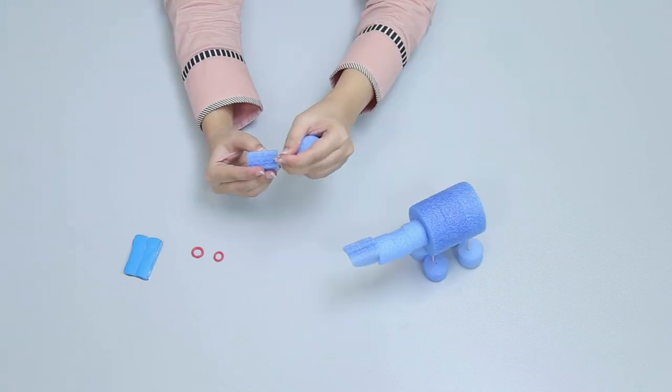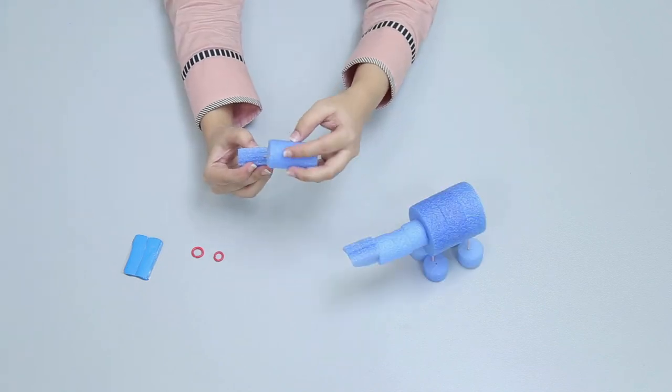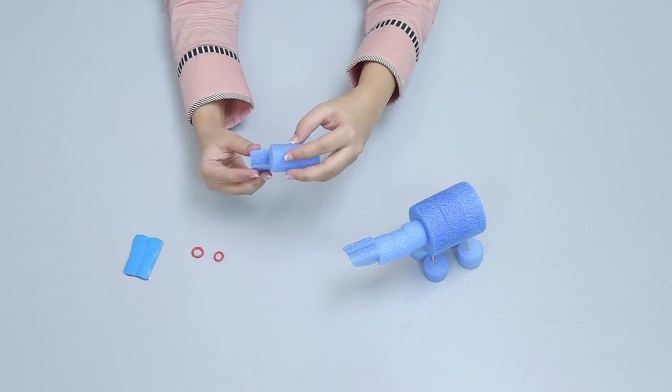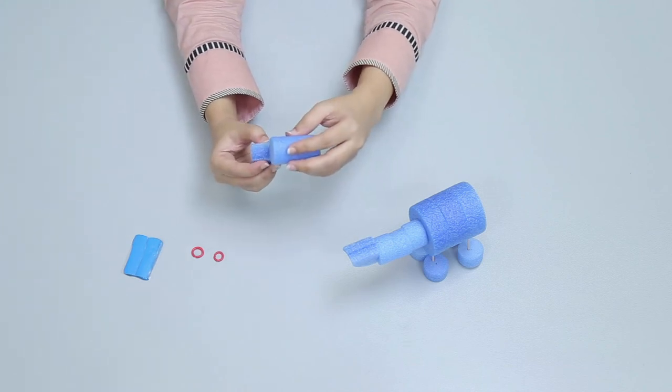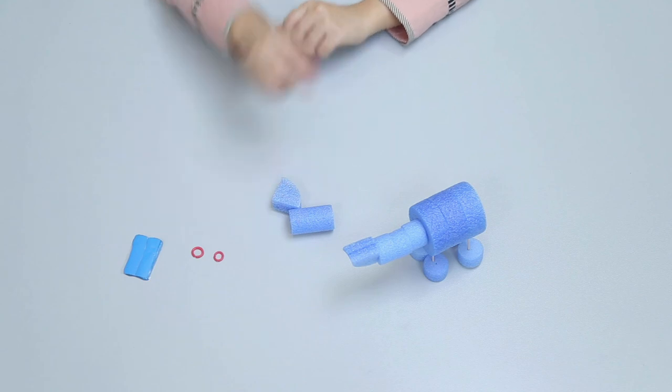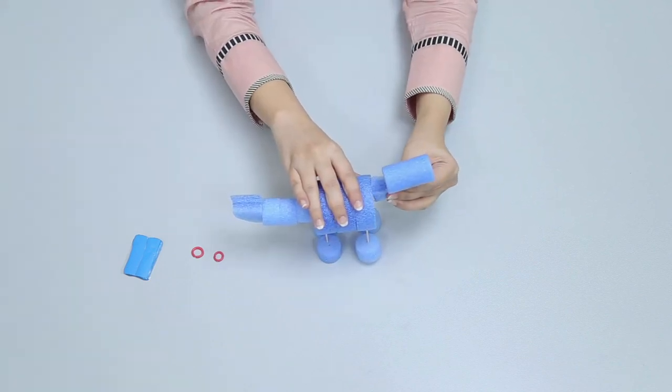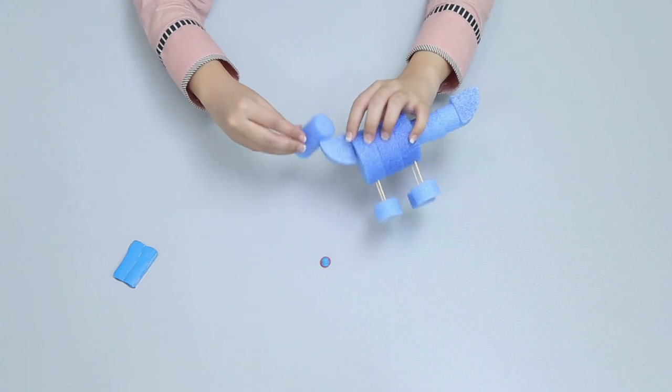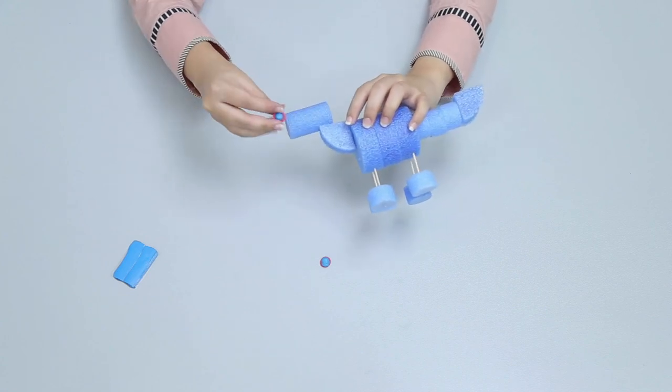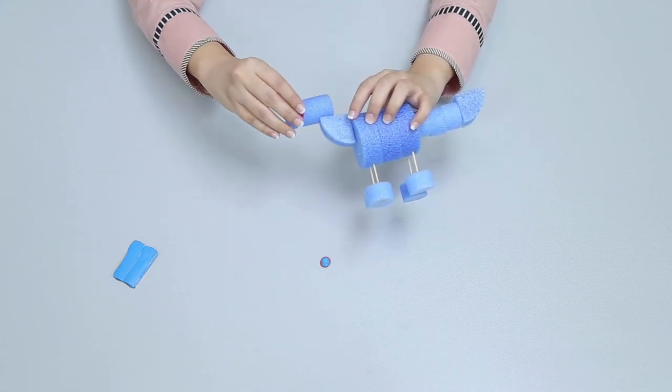Make the face of the dragon by taking a quarter foam wheel and a foam cylinder and attaching them together with toothpicks. Make the eyes of the dragon with sticky tags and plastic links.